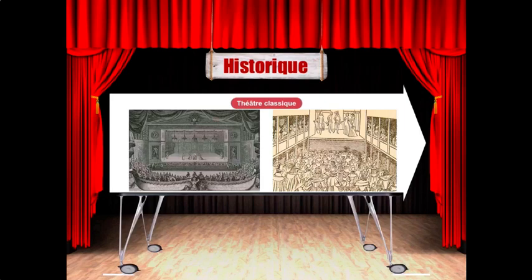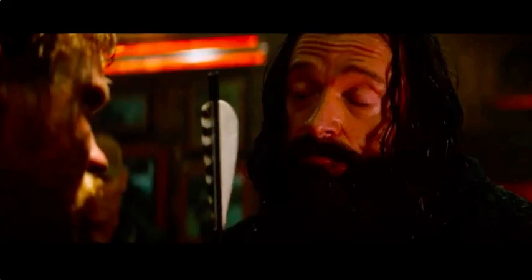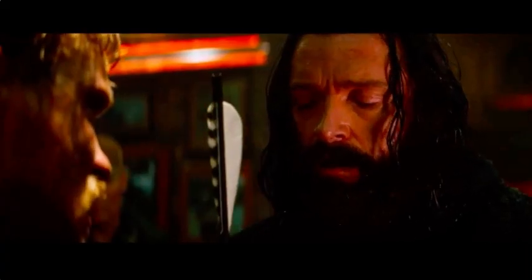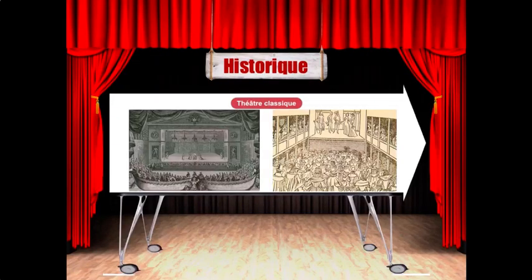Et puis un jour, voilà qu'un petit malin est arrivé et qu'il s'est dit : « Tiens, si on gardait le côté moral du théâtre antique sans l'ennui, et qu'on gardait le plaisir de la tragicomédie sans les incompréhensions, qu'est-ce que ça donnerait si on mélangeait ces deux choses ? » Voilà une question qu'elle est bonne. Et voilà, le théâtre classique est né.